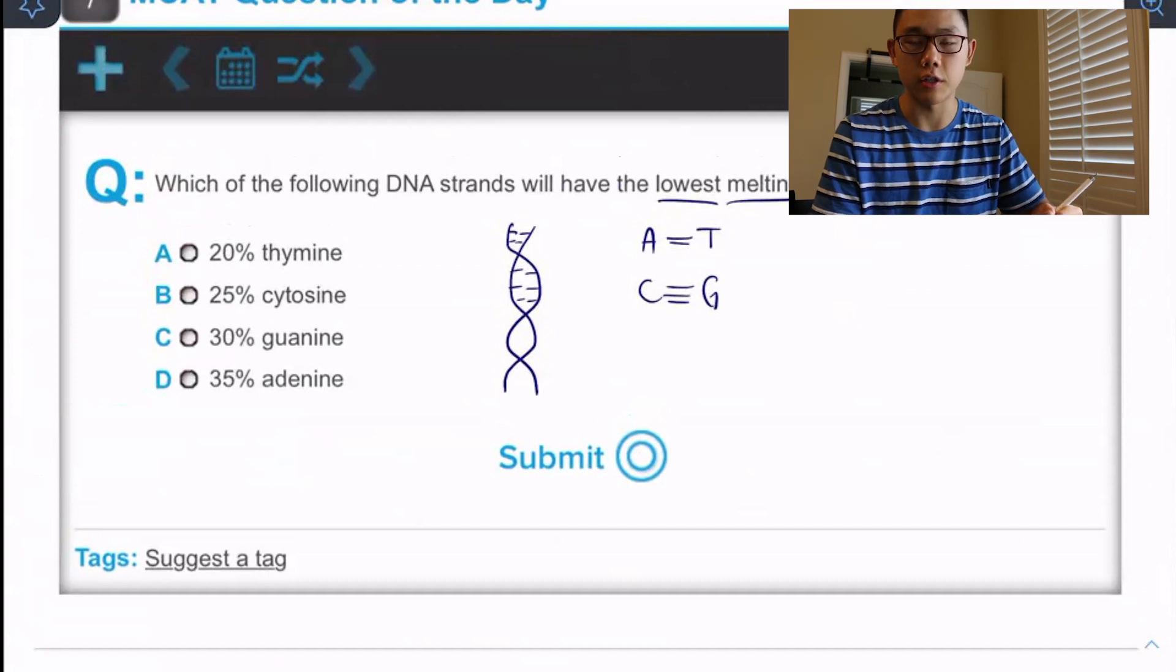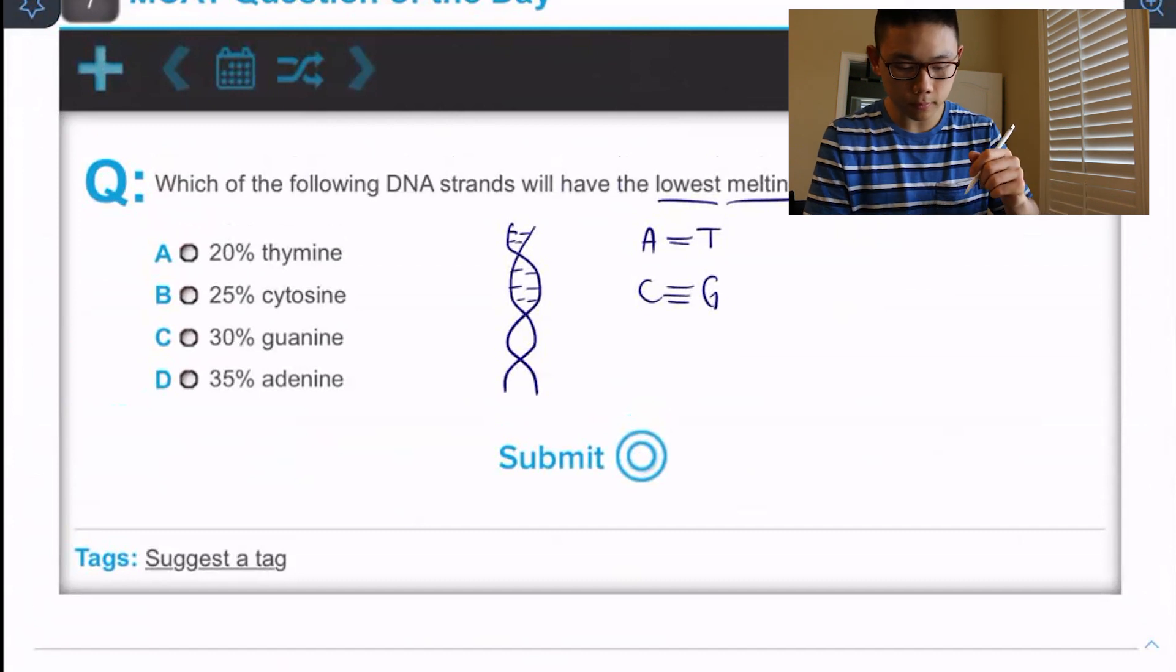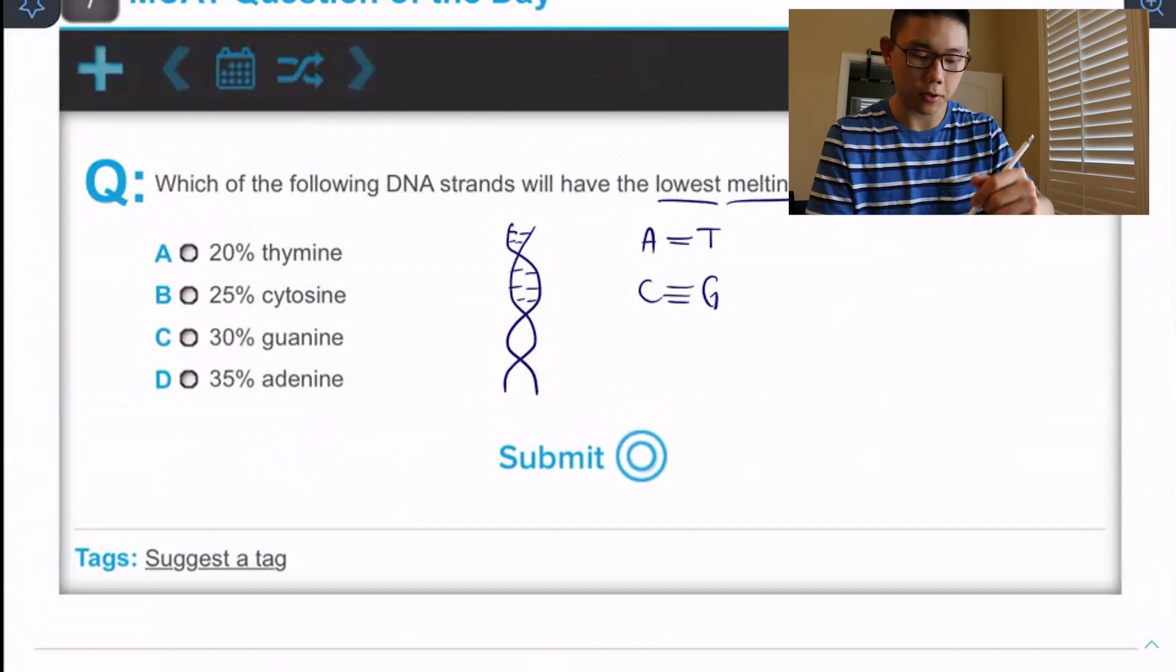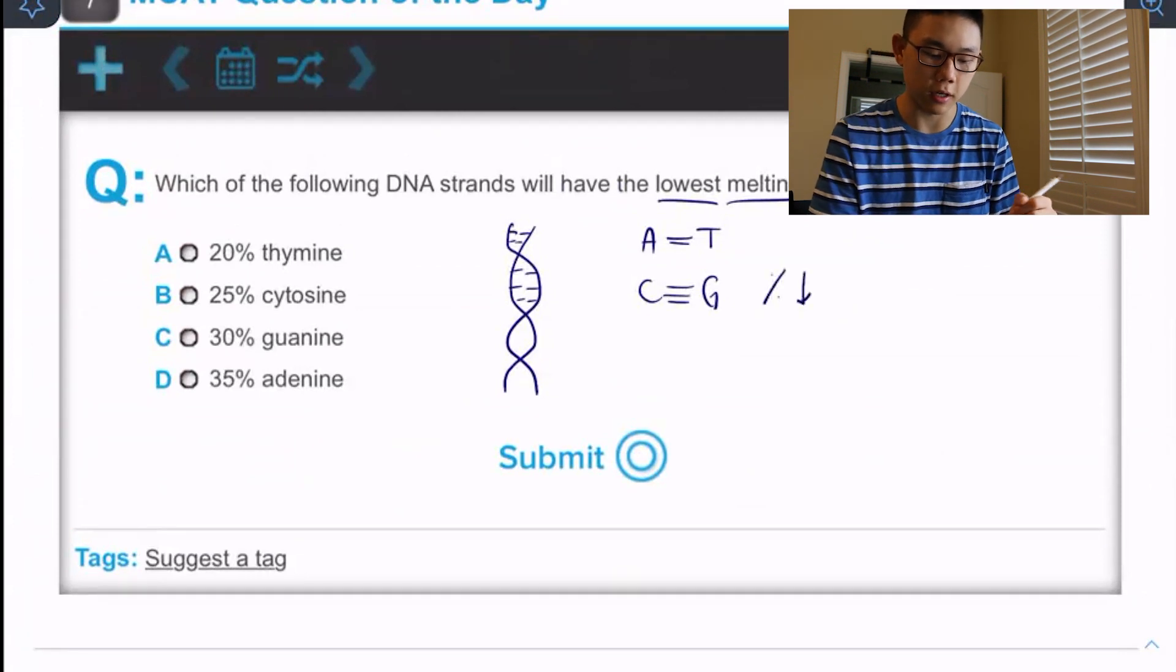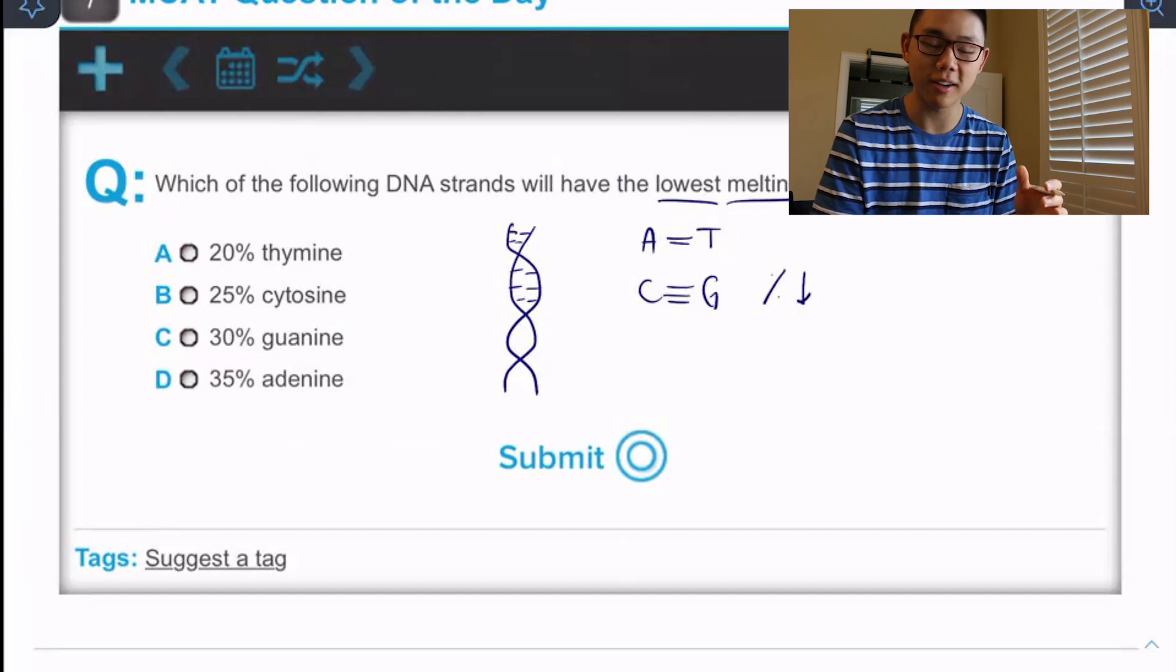So now looking at our answer choices, what are we looking for? We're looking for the lowest percentage of C G base pairs because C G base pairs have three hydrogen bond attractions between them, which is more stable than the two in A T. And so whatever strand has more C G base pairs will be more stable and whatever has less will be less stable.